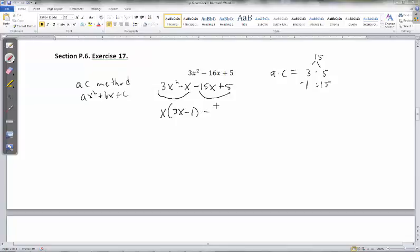If you didn't find a pair that worked with the polynomial, then this polynomial would be prime. It wouldn't factor. And that's what you'd say for your answer. So let's see here. I can pull out an x. That'll leave me with 3x minus 1. And I can pull out a negative 5. That'll leave me with 3x minus 1. And my final answer then will be 3x minus 1 times x minus 5.